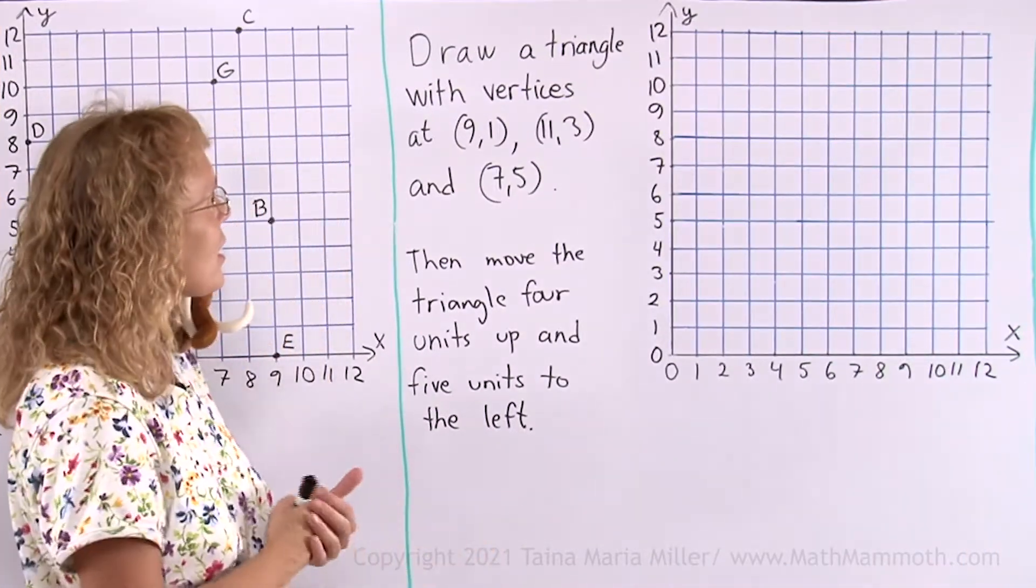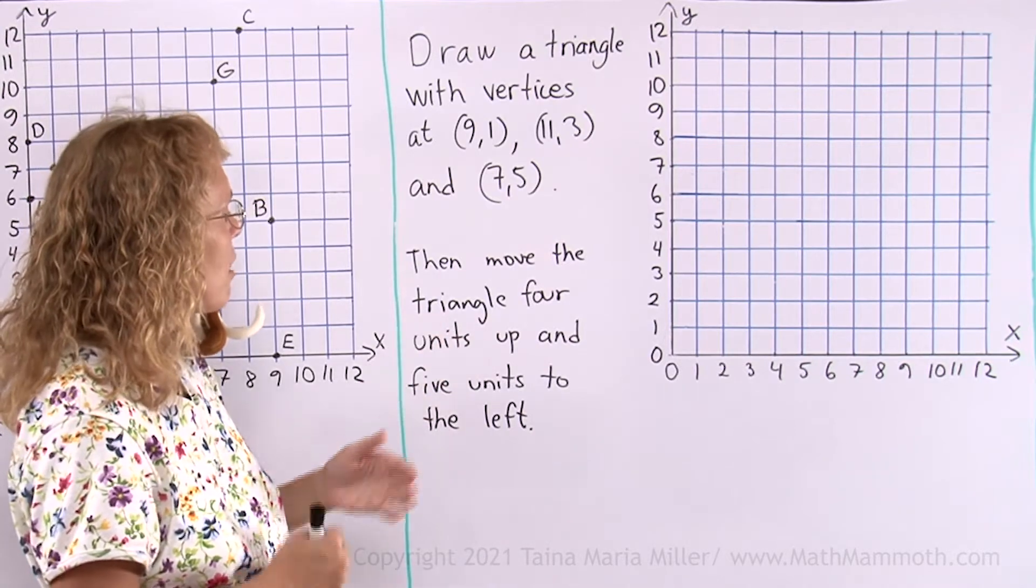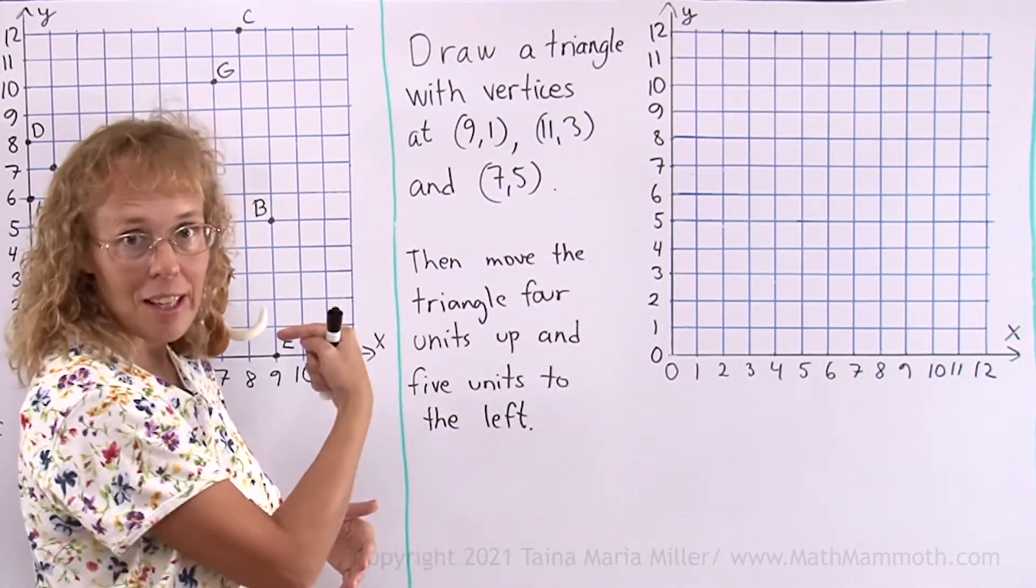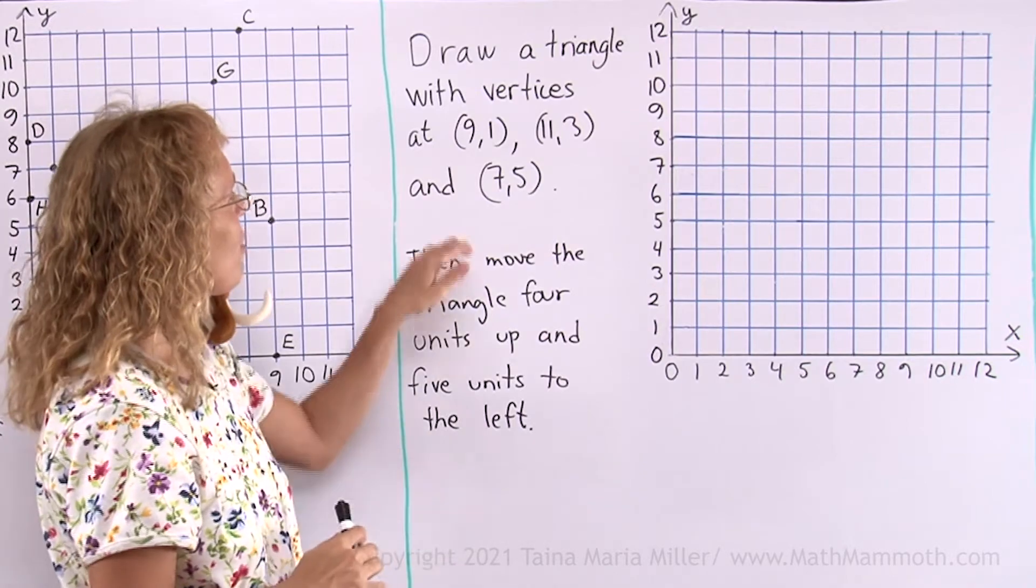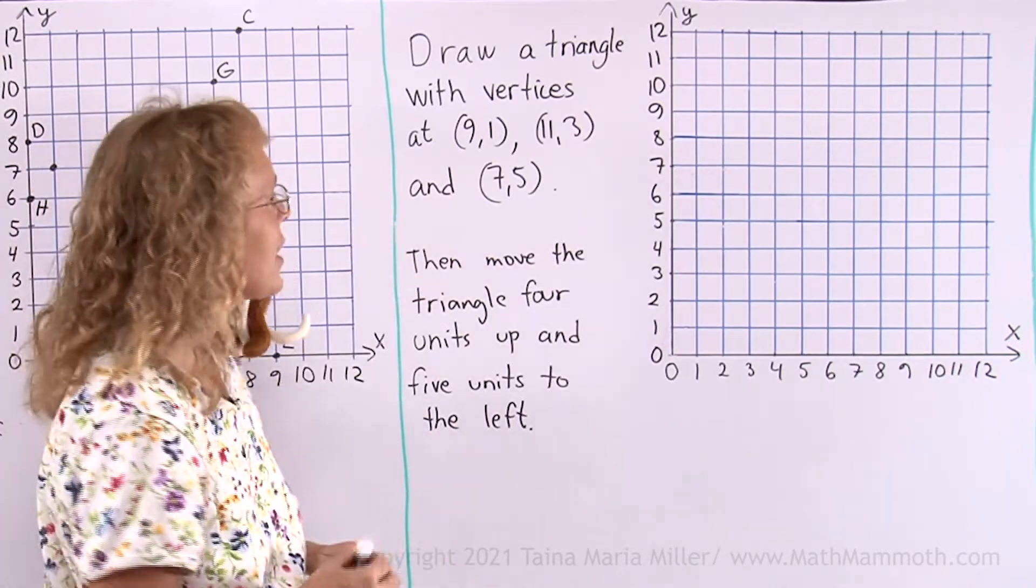Draw a triangle with vertices at these three points. Then move the triangle 4 units up and 5 units to the left. I will first start here by drawing the vertices, and then I will connect them with line segments.